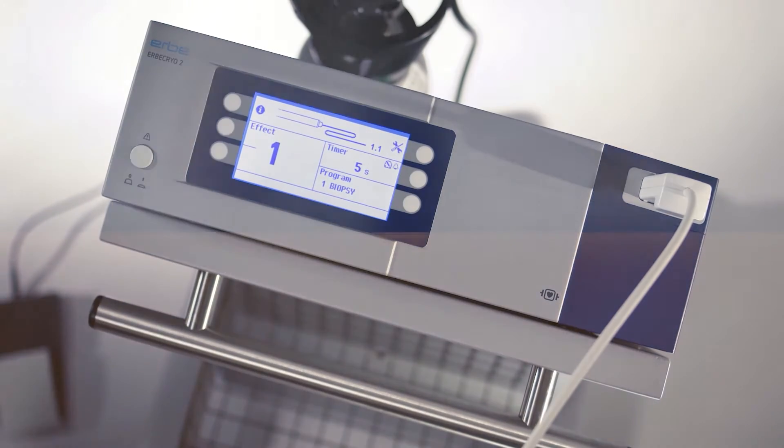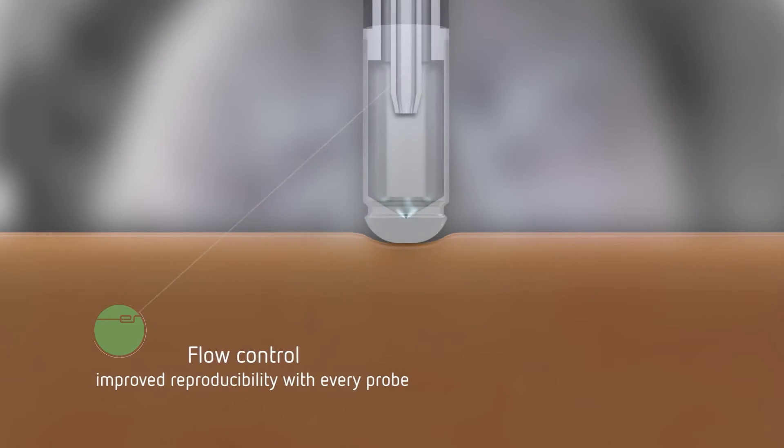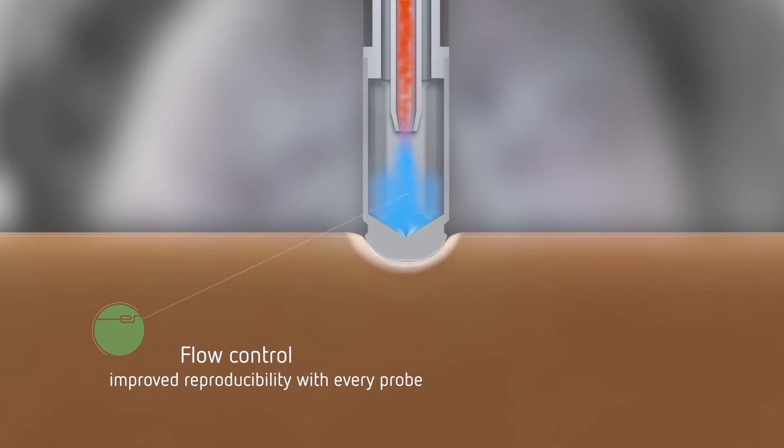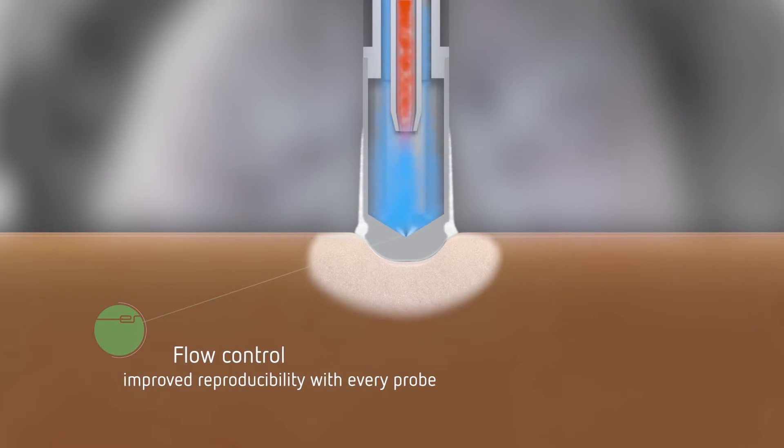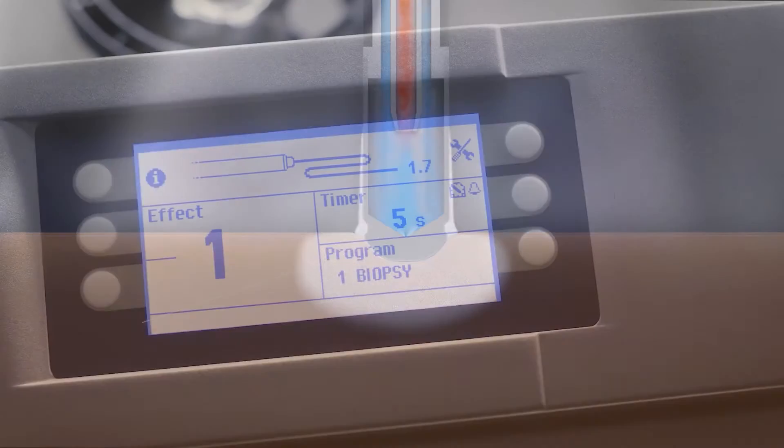During activation, the flow control of the Herba Cryo 2 provides just as much gas as needed for the maximum freezing power of every probe size.